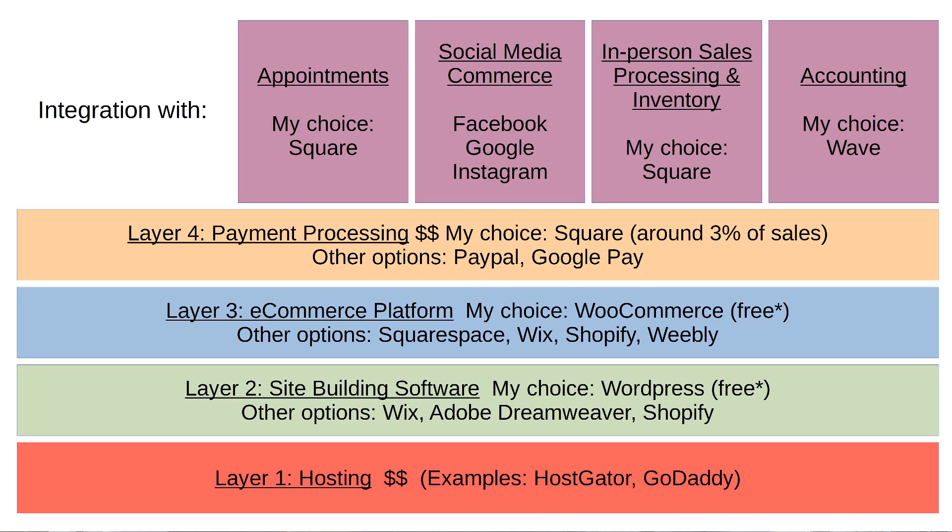I thought it useful to break it up into different layers. The first bottom layer is hosting — that's so when people type in www.fraservalleyrosefarm.com into their browser it actually goes somewhere. For that, somebody has to have registered your domain name and they hold that routing information on a server somewhere. You have to pay some money for it — typically around $15 to $20 a month depending on the service package.